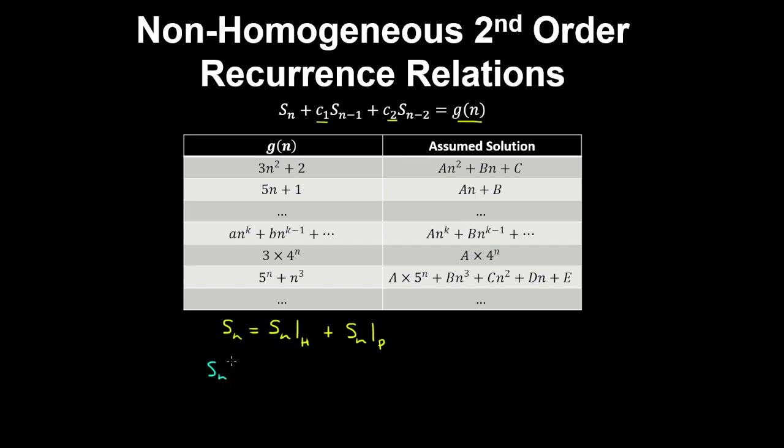And recall that the homogeneous solution was some constant by lambda 1 to the n plus another constant by the second real root to the power of n. And for this case, for example, we have distinct real roots.